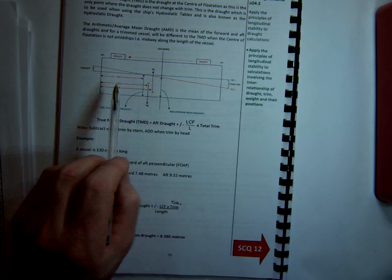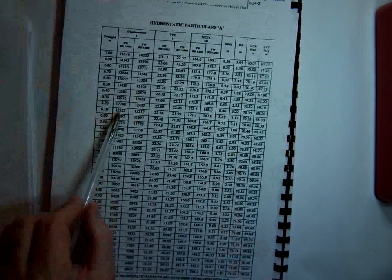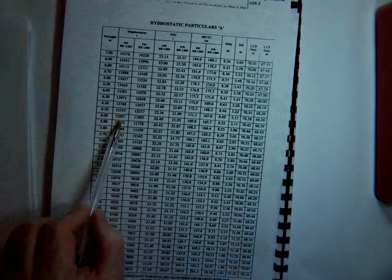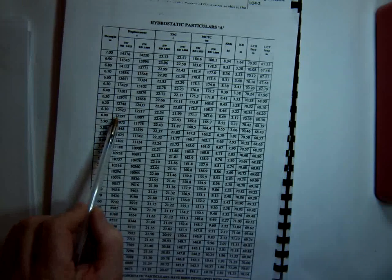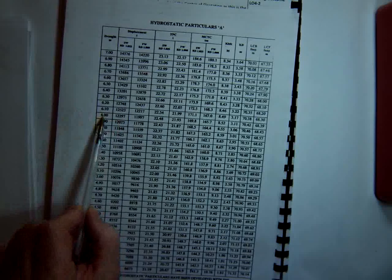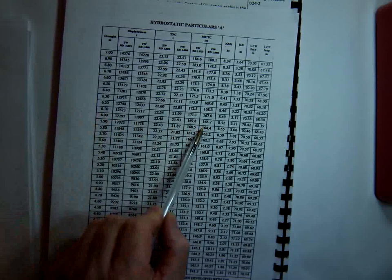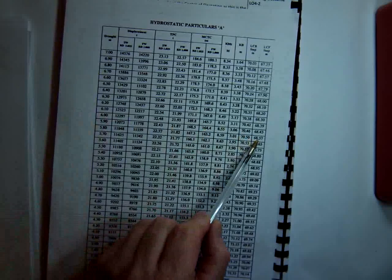So we would get most of the values from the hydrostatic particulars, maybe by interpolation. If your displacement doesn't fit exactly with one of these values, you would need to interpolate. And the values we get, true mean draft, MCTC, depending on salt or fresh water, LCB, and LCF.